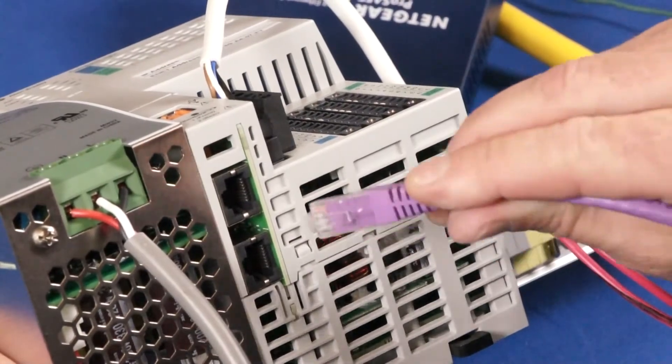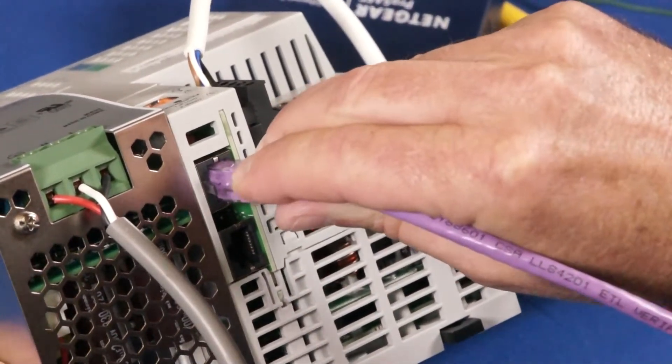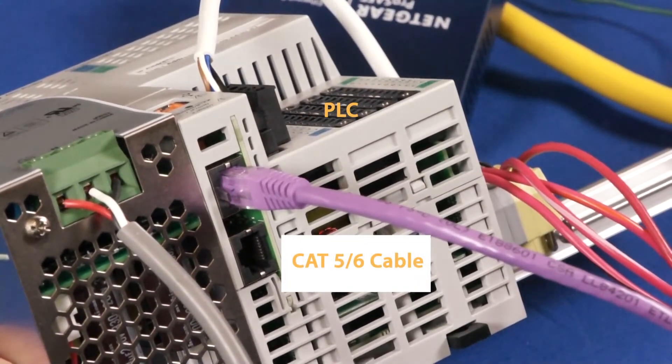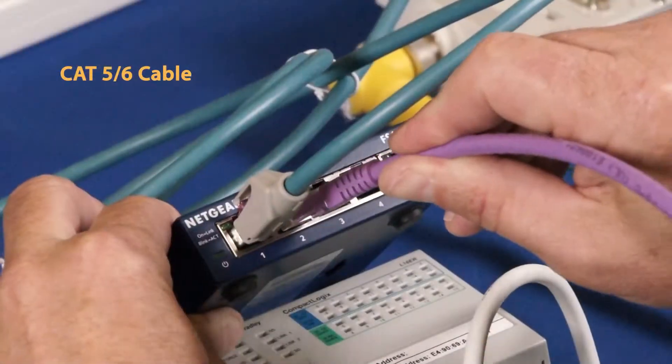Next, connect the PLC to the network. In our case, we use the patch cable RJ45 connector at the PLC and the other at the switch.